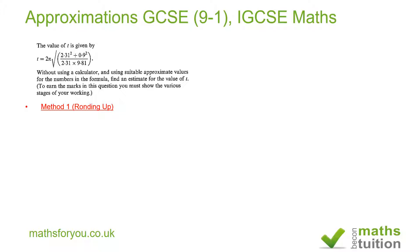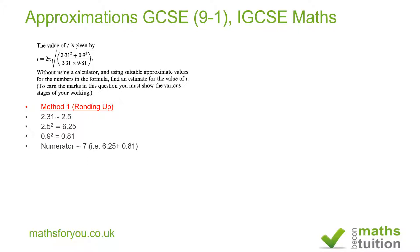2.31 is near enough to 2.5, and the square of 2.5 is 6.25. So 2.5 squared is 6.25. Next, 0.9 squared will be 0.81. So what I then do is add 6.25 to 0.81, which gives a value of about 7.